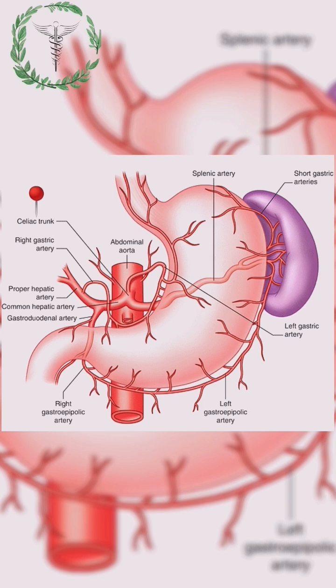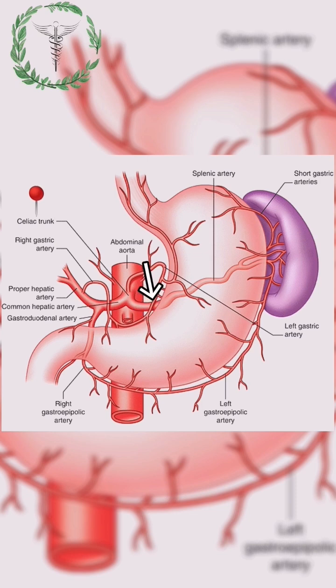And the third branch is the hepatic artery, which is further divided into the right gastric artery, which supplies the lower part of the lesser curvature. It has also got the right and left hepatic arteries.